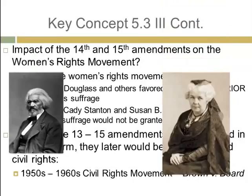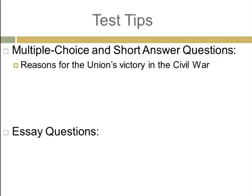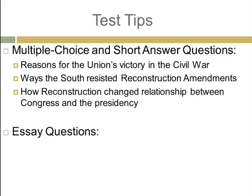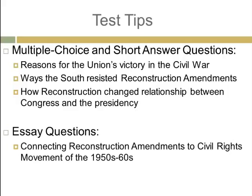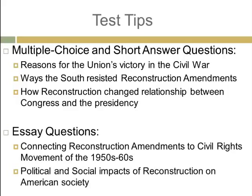Let's finish up with some test tips. For multiple choice and short answer questions, be able to describe the reasons for the Union's victory in the Civil War, the different ways that the South resisted Reconstruction Amendments, and how Reconstruction changed the relationship between Congress and the presidency. For essay questions, be able to connect Reconstruction Amendments to the civil rights movement in the 1950s and 1960s — that will give you your synthesis point in the long essay. Also be able to explain the political and social impacts of Reconstruction on American society, not just African Americans, but women as well.